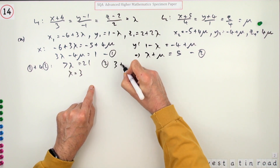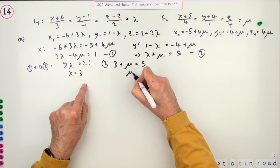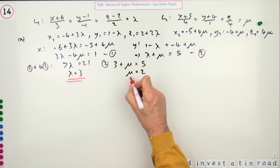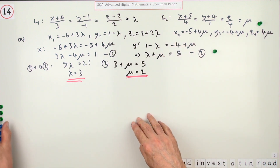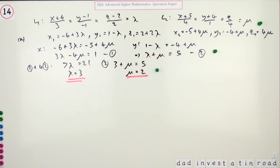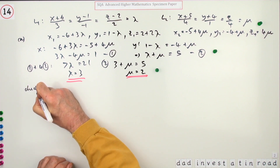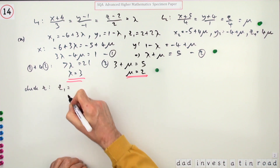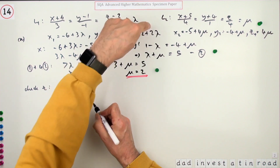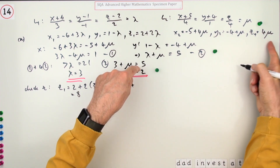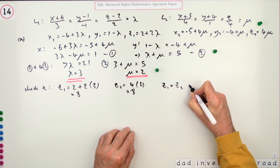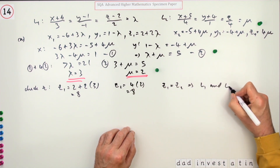Putting lambda equals three into equation two: three plus mu equals five, so mu equals two. Forming the simultaneous equations is a mark, and finding the parameter values is a mark. Now I need to demonstrate the lines actually intersect by checking the z-coordinates: z1 is two plus two times three which is eight, and z2 is four times two which is also eight. So z1 equals z2, meaning lines L1 and L2 do intersect.